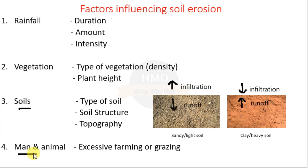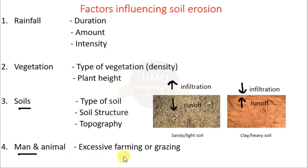The last factor is man and animal. Man contributes to soil erosion through activities like extractive farming and construction, while animals destroy vegetation through excessive grazing. These are some of the factors which affect soil erosion.